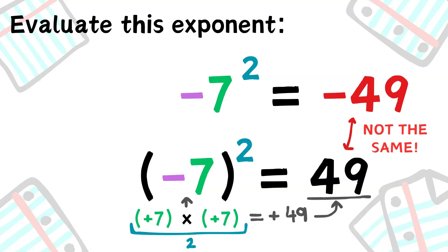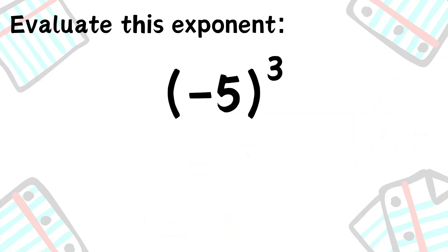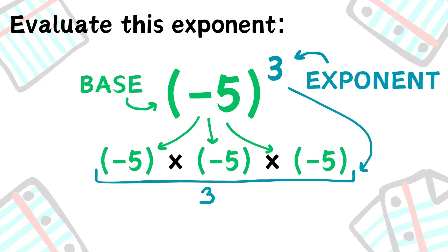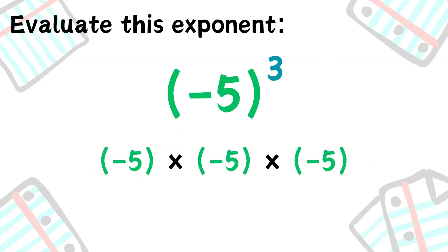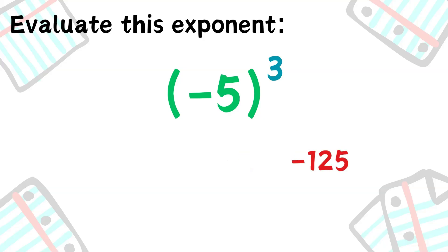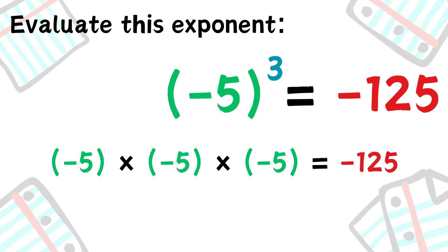It's important to keep track of your signs. Only exponentiate them if they are in parentheses; otherwise, leave them as they are. Now, what is negative 5 to the power of 3? Negative 5 times negative 5 is 25, and 25 times negative 5 is negative 125. So negative 5 to the power of 3 is negative 125.